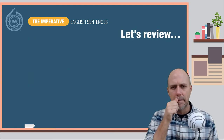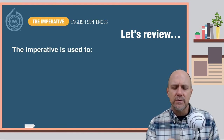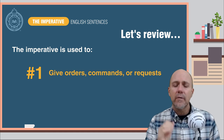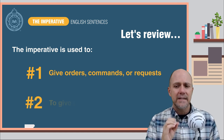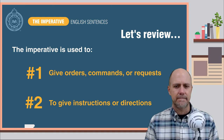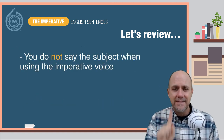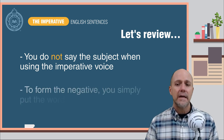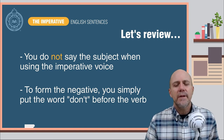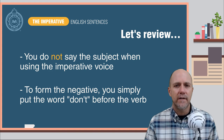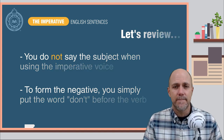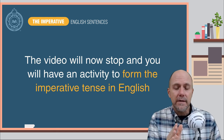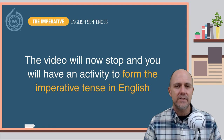Let's review. The imperative is used to: number one, give orders, commands, or requests; number two, to give instructions or directions. You do not say the subject when using the imperative voice. And to form the negative, you simply put the word 'don't' in front of the verb in its simple form. The video will now stop, and you will have an activity to practice forming the imperative tense in English sentences.